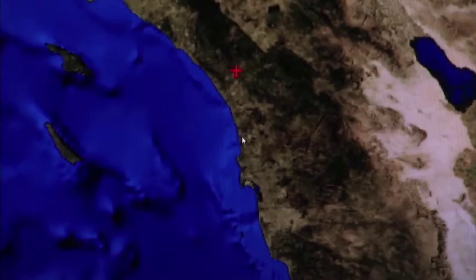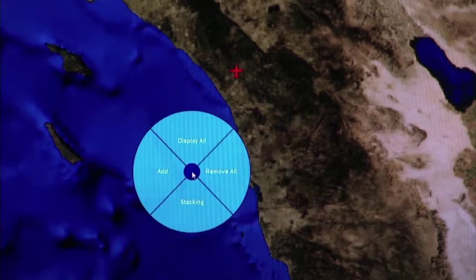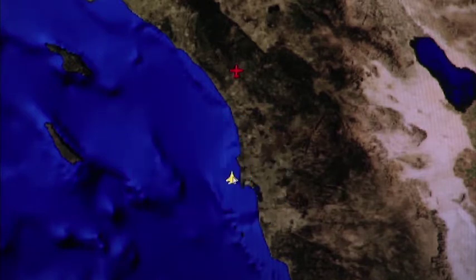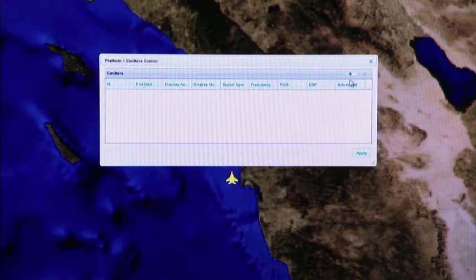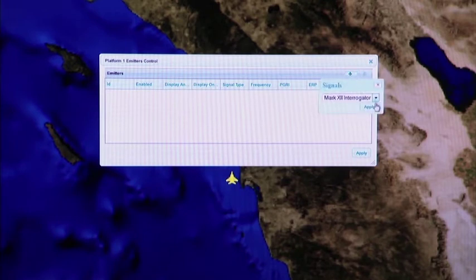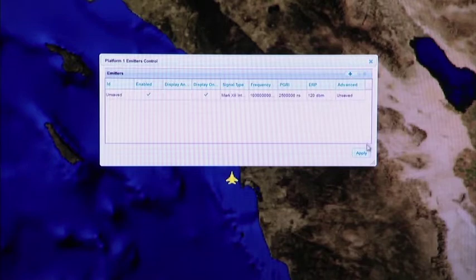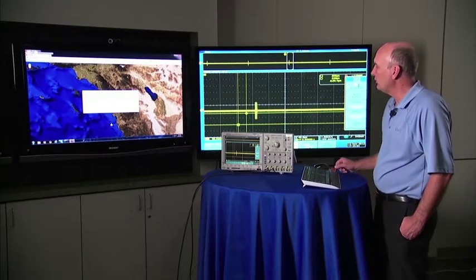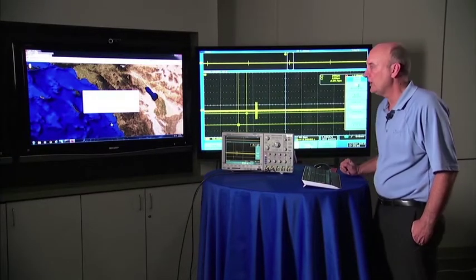And then from here it's just points and clicks. Right click, add a platform. From the platform, right click, add an emitter. We can either add interrogators or transponders. Today I'm going to show interrogators. Hit apply. And then there's by default our two pulse mode one interrogation.